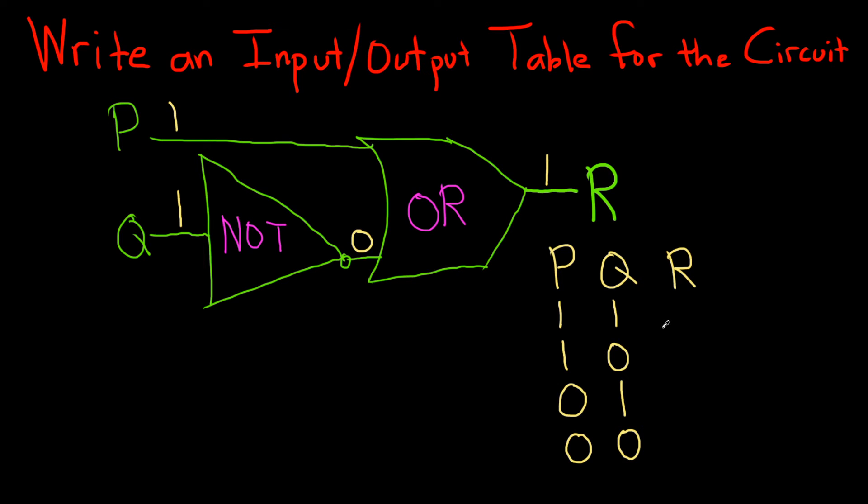Okay, let's go ahead and do 1, 0. Again, we write the 1 here and the 0 here. As 0 goes through the NOT gate, it becomes a 1. And then we have two 1s entering the OR gate, so they're both true. We're going to get a true result, so again we have a 1 here for R.